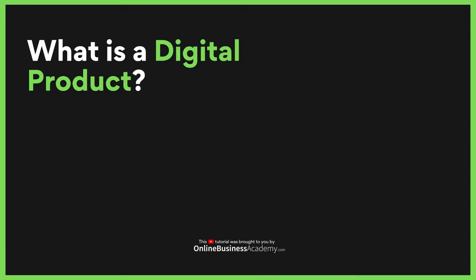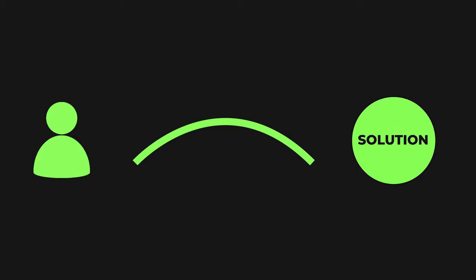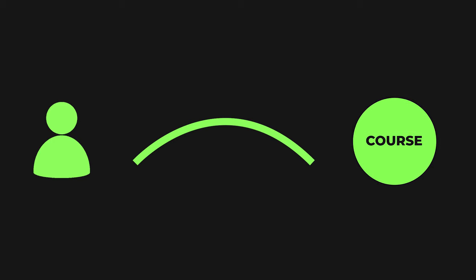Let us begin with: what is a digital product? A digital product is a virtual product or service that offers some form of utility to a human being. In other words, all digital products — from an online course and mobile app to a website experience — attempt to solve a problem for a group of people trying to accomplish something. The way I look at digital products is as a bridge from a person to a solution, or a painkiller.